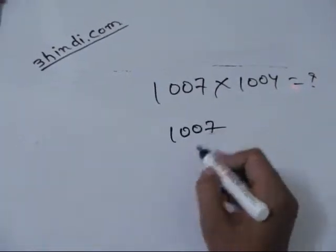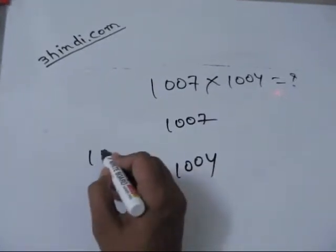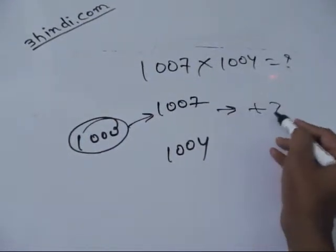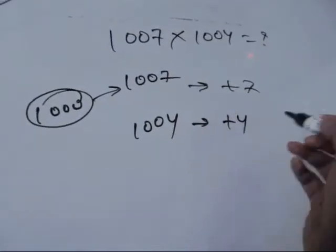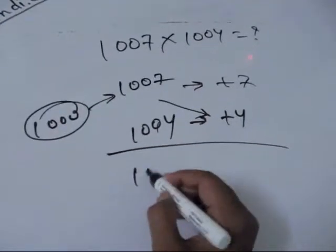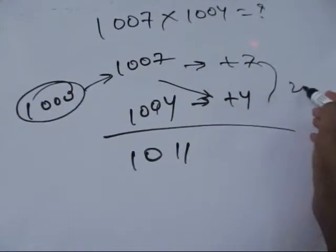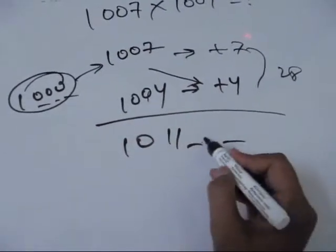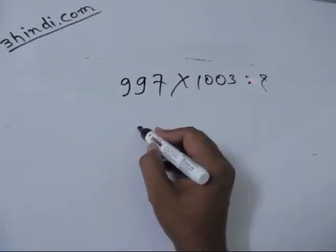Applying the same rule: the first digit is 1007 and the second digit is 1004. How much away from thousand? The first is plus seven, the second is plus four. So just add the corner, which will come as 1011. Multiply in the second step: plus seven into plus four is plus twenty-eight. There are three places left vacant, so put twenty-eight in those three places.